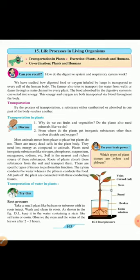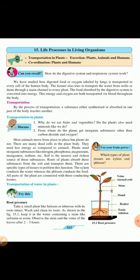Now, can you recall, how does the digestive system and respiratory system work? We have already learnt this, but let us recall it. We all know that digestive system converts the complex foodstuffs into simple, soluble, absorbable nutrients - one which can be absorbed.